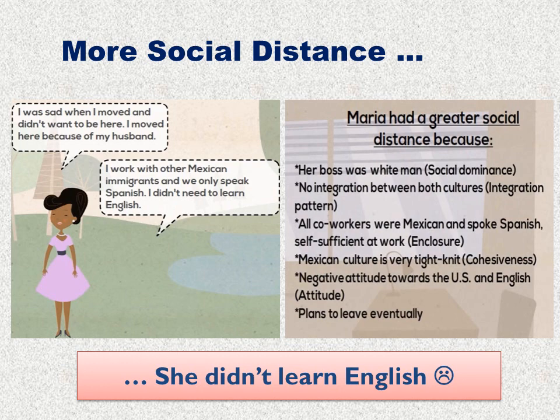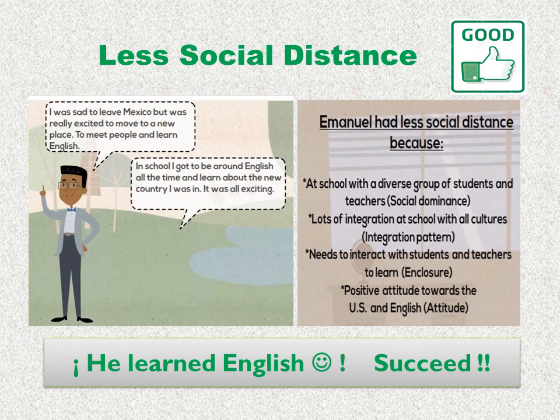On the contrary, let's see Emanuel's case. Emanuel was also from Mexico, and he had less social distance. Why? Because at school he interacted with a diverse group of students and teachers. There were lots of integration at the school with all cultures, and he needed to interact with students and teachers to learn. He also had a positive attitude towards the target language group. At the end, Emanuel learned the English language and succeeded.